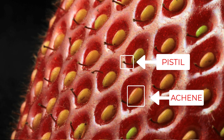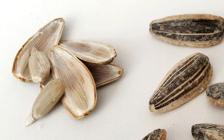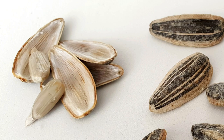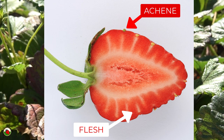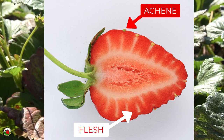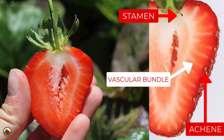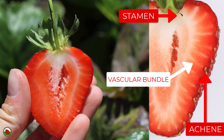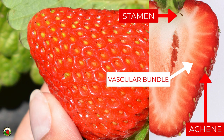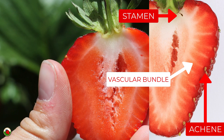Many other plants produce achenes. A prominent example is the sunflower — what we call sunflower seeds are technically achenes because the seed is inside a hard outer shell. The part of the fruit that we eat is called the mesocarp or flesh. What we commonly call fruit is actually an aggregate accessory fruit because it is derived from the receptacle and not the ovaries. Each achene is connected to a vascular bundle, which depending on the variety are often seen extending through the mesocarp from the achene to the center of the fruit.